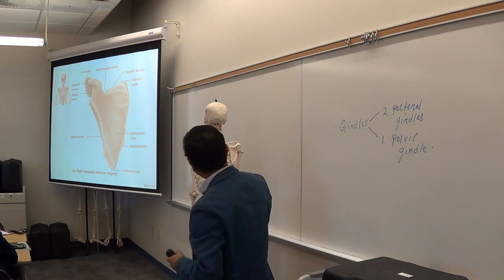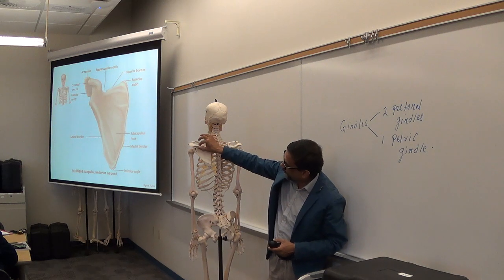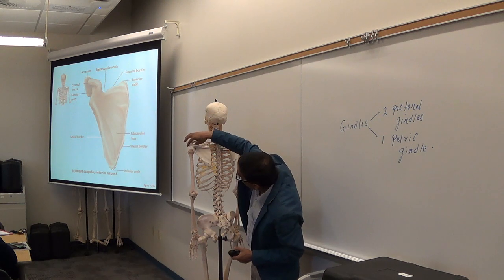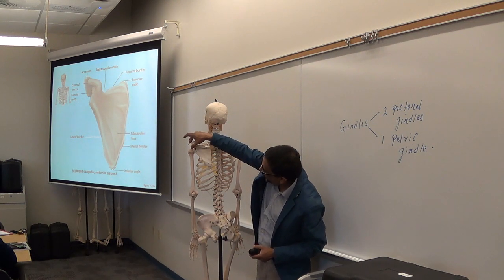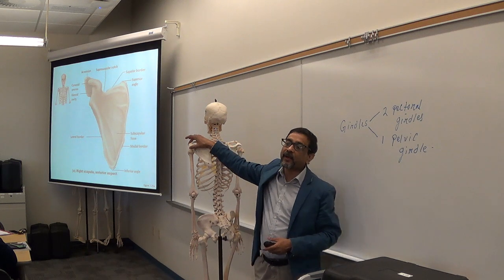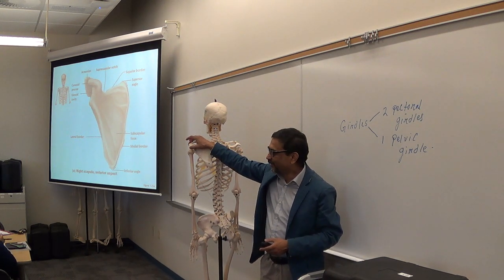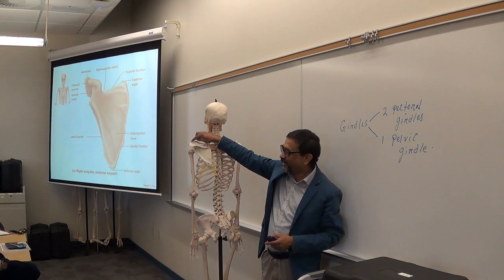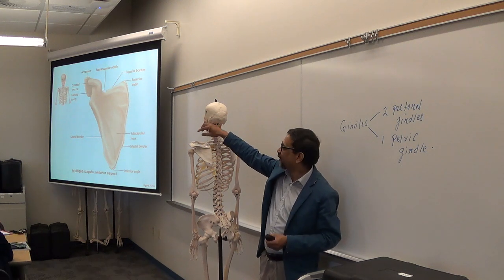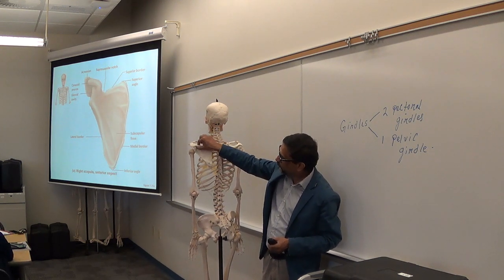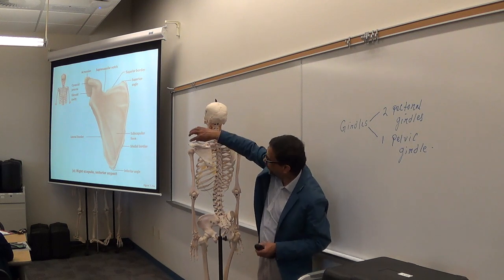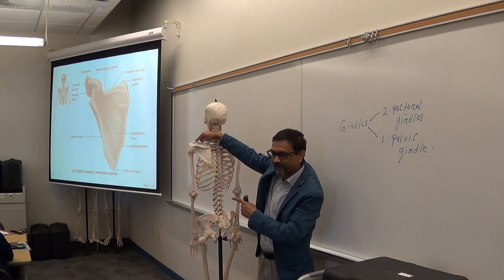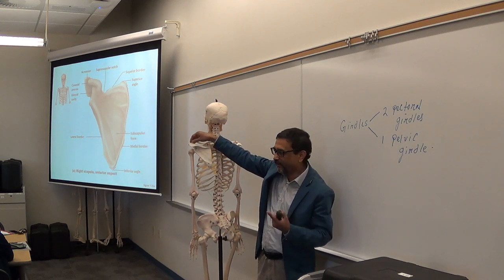The spine of the scapula continues and turns, and the end part is called the acromion. The acromion articulates with the clavicle to form the acromioclavicular joint. So: this is the spine, this part is the acromion, and this joint is the acromioclavicular joint.